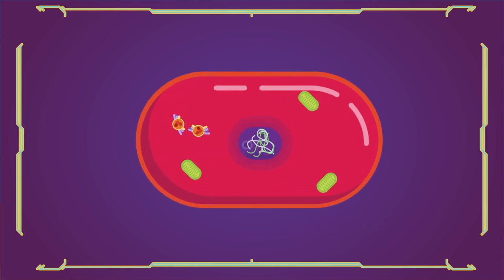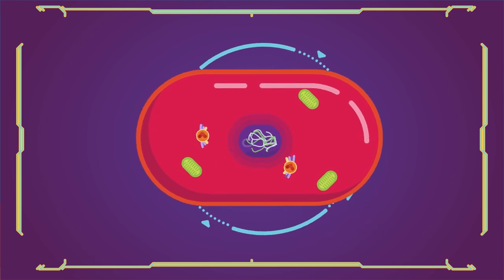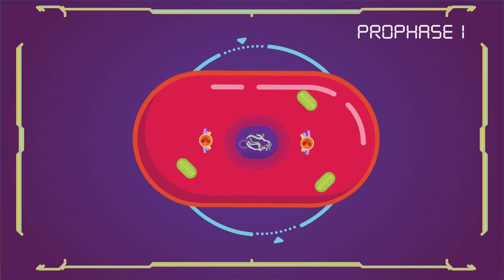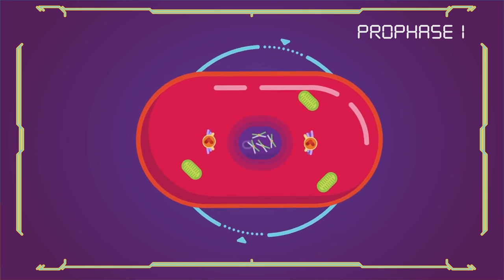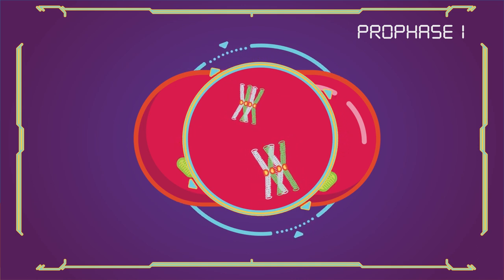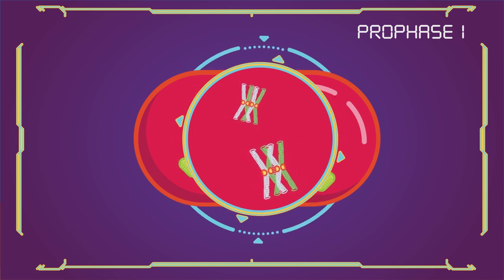In the next step at meiosis 1, meiosis 1 takes place in following steps: Prophase 1. Prophase 1 is typically the longest phase of meiosis. During prophase 1, homologous chromosomes pair and exchange DNA through homologous recombination.